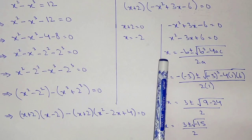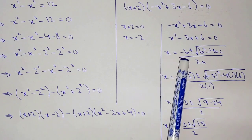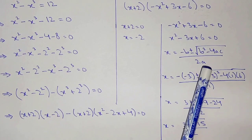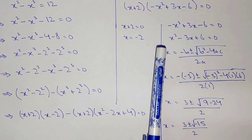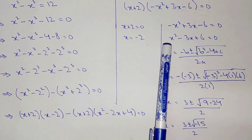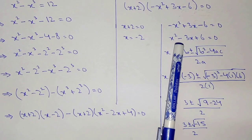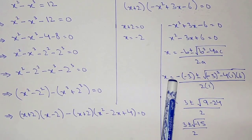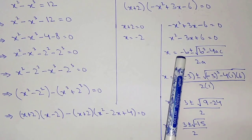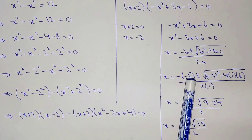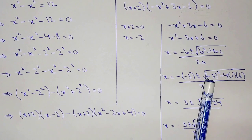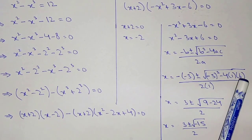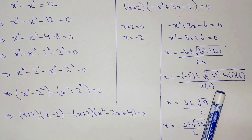Now applying the quadratic formula: x equal to minus b plus or minus under root b squared minus 4ac, divided by 2a. Here a is 1, b is minus 3, and c is 6. So x equal to minus of minus 3 plus or minus under root of minus 3 squared minus 4 into 1 into 6, divided by 2 into 1.